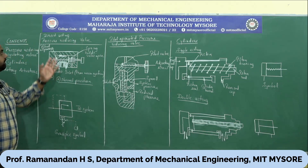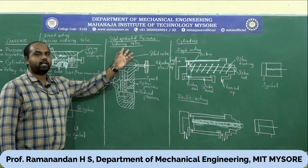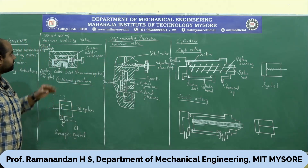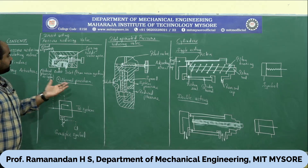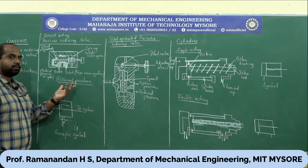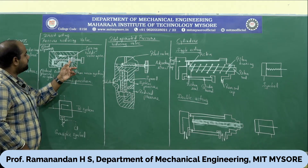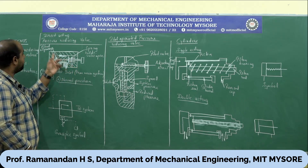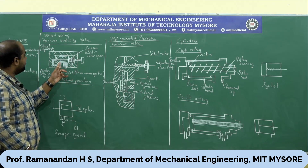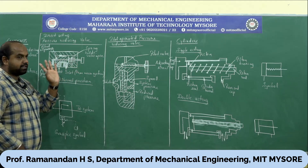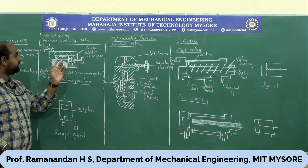We classify pressure reducing valves into two types: direct acting pressure reducing valve and pilot operated pressure reducing valve. Looking at the direct acting pressure reducing valve, this is the normal initial position of the valve. You can see here there is an adjusting screw assisted by a spring, and this is the bleed oil passage. This is the external casing, and there is a connection between the outlet and the bleed oil passage.